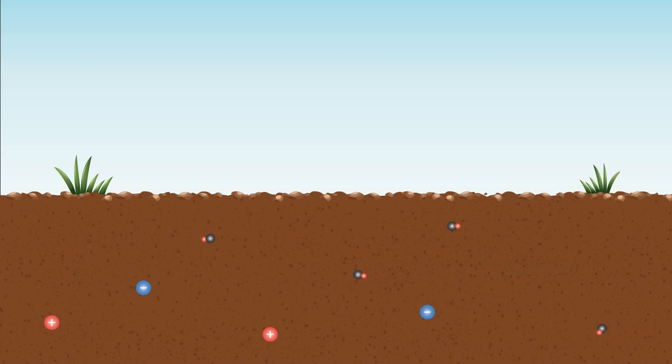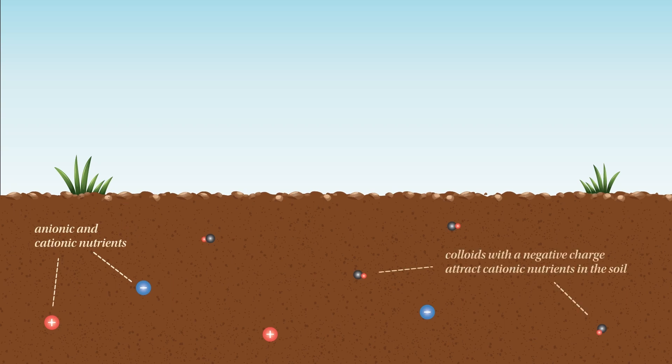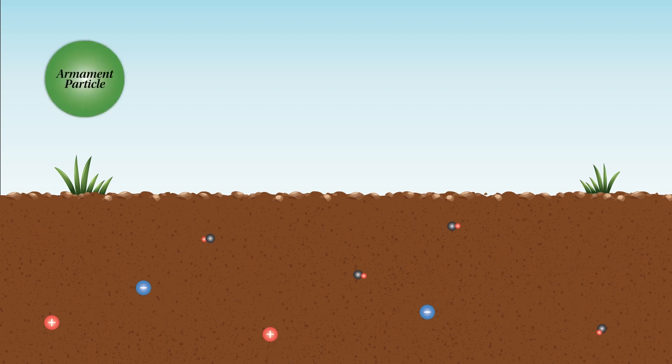In the soil, there are negatively charged anions and positively charged cations. Naturally occurring colloids in the soil have negative charges and attract positively charged nutrients. When you add armament to the soil, it magnifies the amount of negatively charged sites.